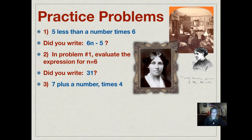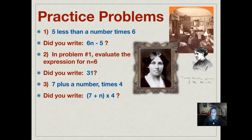Number three: write as an expression — seven plus a number, times four. The answer is (7 + n) × 4, with parentheses around seven plus n. Remember, there's a comma after 'seven plus a number' that tells us that is one math operation. We put parentheses around it to make sure we work that first, then multiply the result by four.